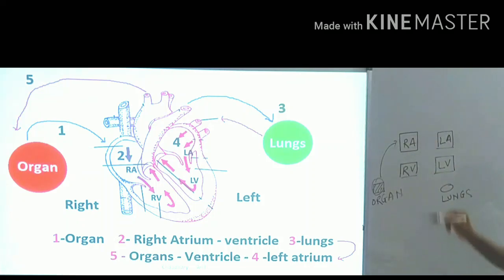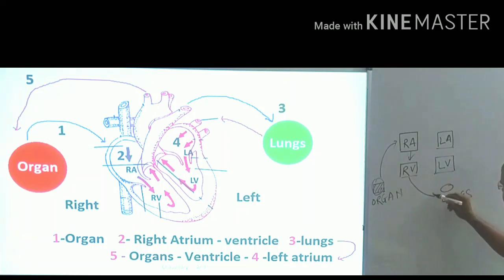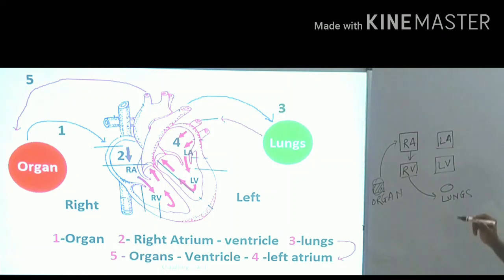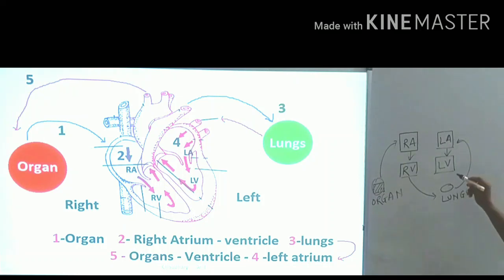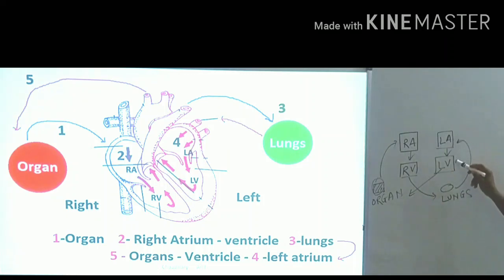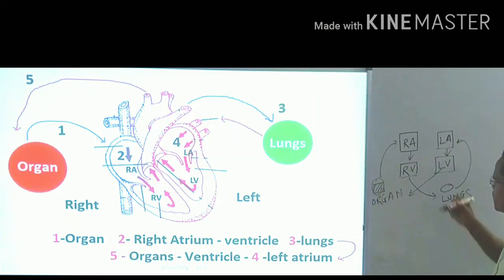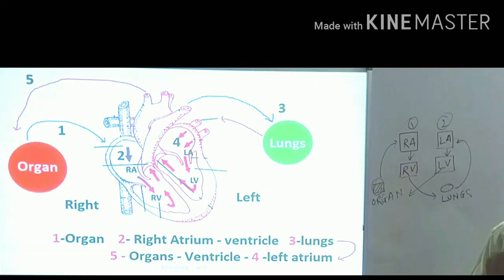Oxygen is carried back in the blood, which reaches the left atrium, then the left ventricle, and is distributed to the organs. Blood circulates from organs to the heart, from the heart to the lungs, and from the lungs back to the organs. Because blood enters the heart two times, this is called double circulation.